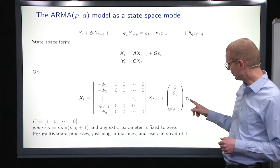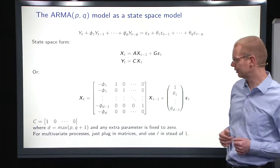so we have to have epsilon t there, and then we can take, if there are moving average parts, we add those up into the equation there.